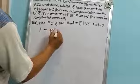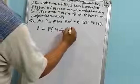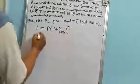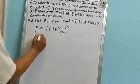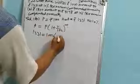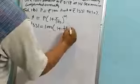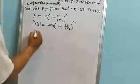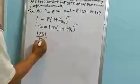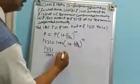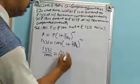Amount is equal to P times (1 plus R by 100) to the power N. Here the amount is 1331. 1331 upon 1000 equals 11 by 10 to the power N.